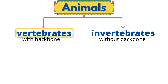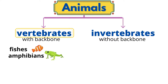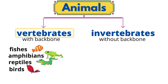Vertebrates are divided into smaller groups like fish, amphibians, reptiles, birds, and mammals.